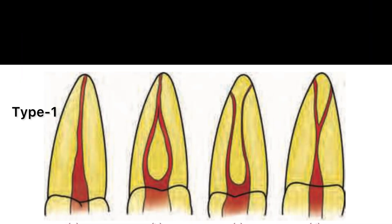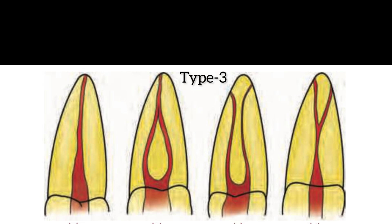Type 1: single canal from the pulp chamber to the apex. Type 2: two canals leaving the chamber and merging to form a single canal short of the apex. Type 3: two separate and distinct canals from the chamber to the apex. Type 4: one canal leaving the chamber and dividing into two separate and distinct canals.